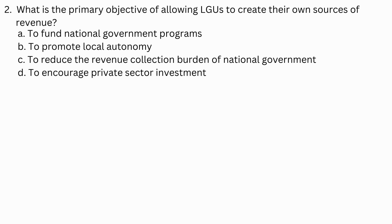Number 2. What is the primary objective of allowing LGUs to create their own sources of revenue? a. To fund national government programs. b. To promote local autonomy. c. To reduce the revenue collection burden of national government. d. To encourage private sector investment.